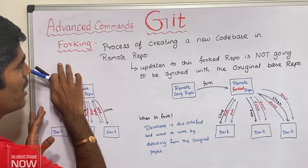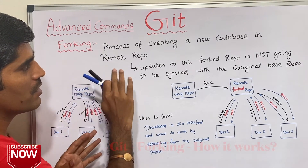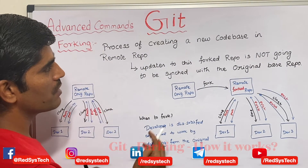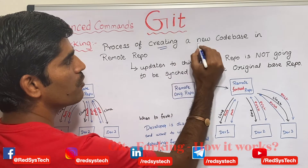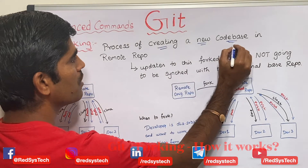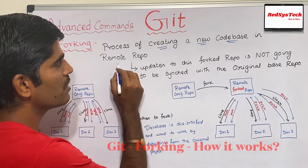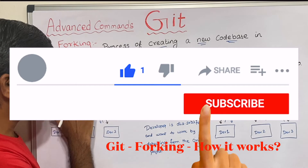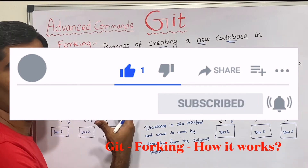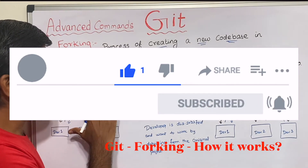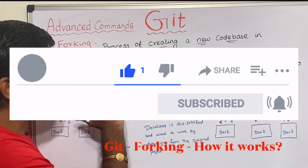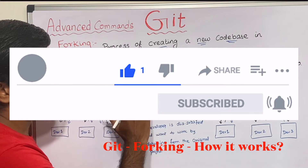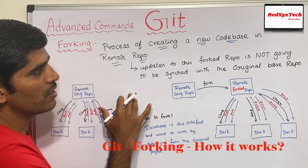There is a concept called forking, which is nothing but the process of creating a new codebase by using the remote repository. Let's say you have a remote repository, whatever codebase you have, and you are going to create a copy of it — that is nothing but a forking codebase.